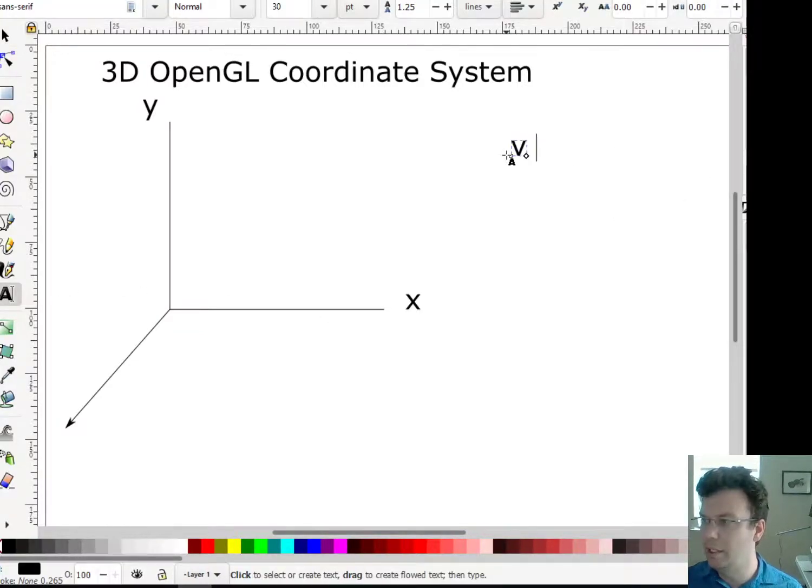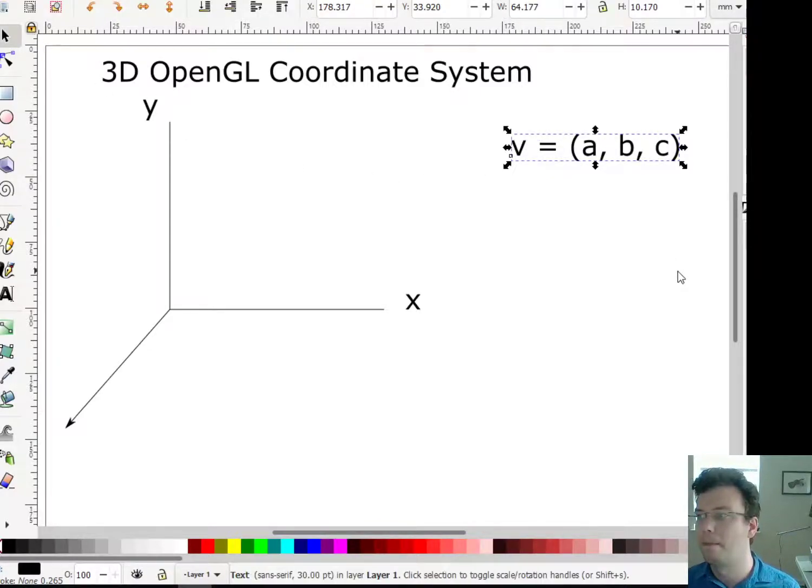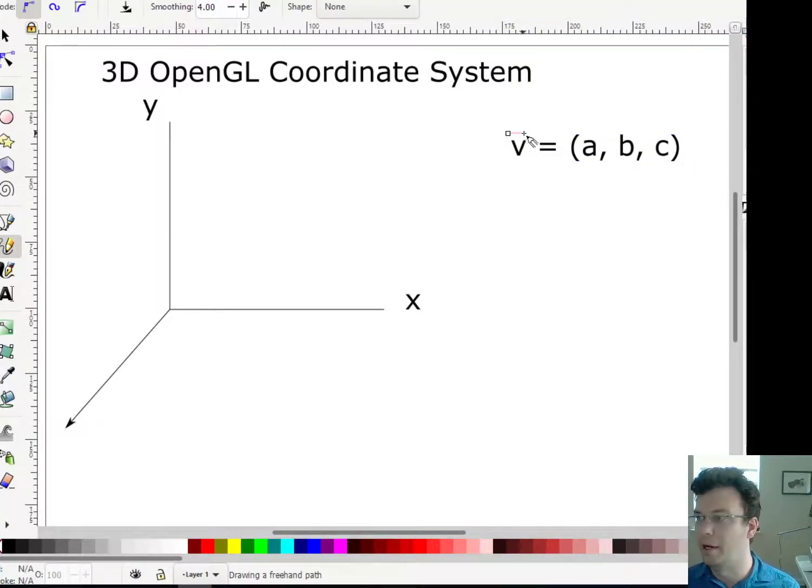But so now let's say I have a vector v, and it's actually going to have three coordinates, A, B, and C. Let's not forget to put our arrow on top here.